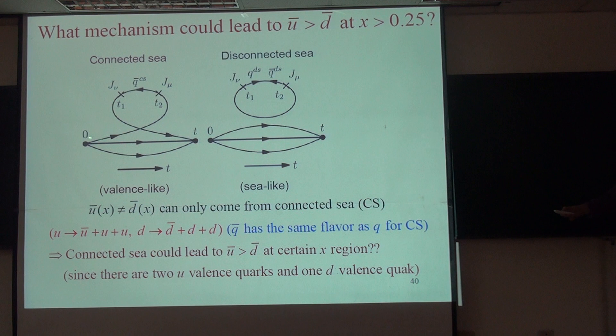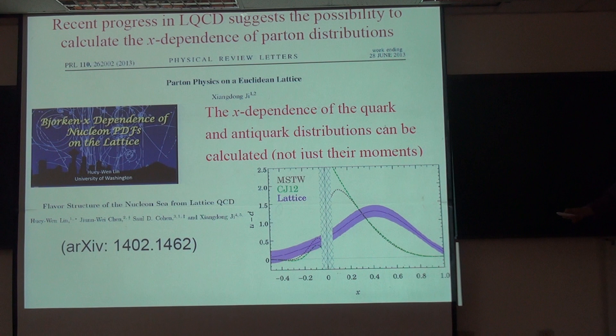It's a very simple idea. At very large x if it's dominated by the connected sea, for the D-bar and U-bar, you can see that there are two ways to produce a U-bar because there are two U-quark valence lines. Valence quark here. There's only one way to produce a D-bar. Therefore, this will actually reverse the asymmetry of the D-bar and U-bar.